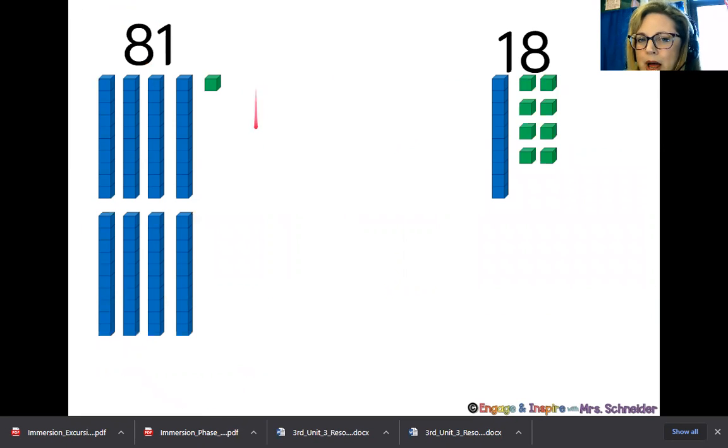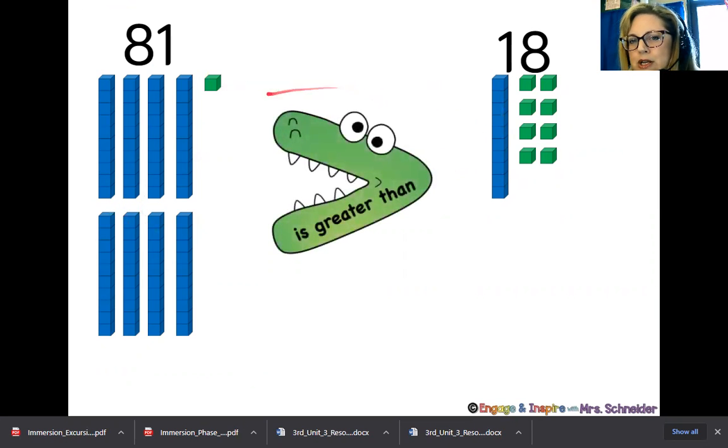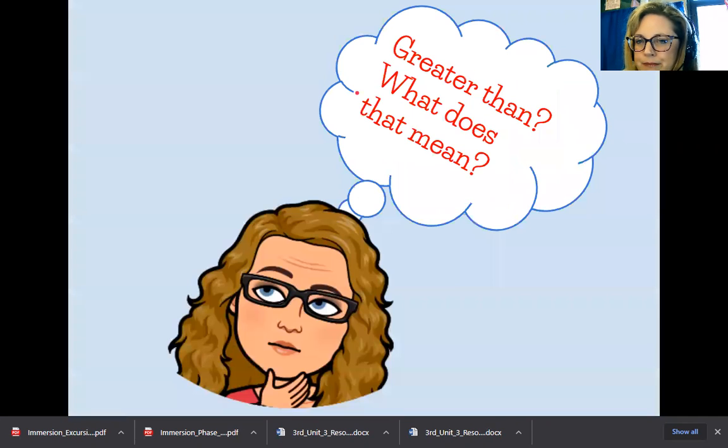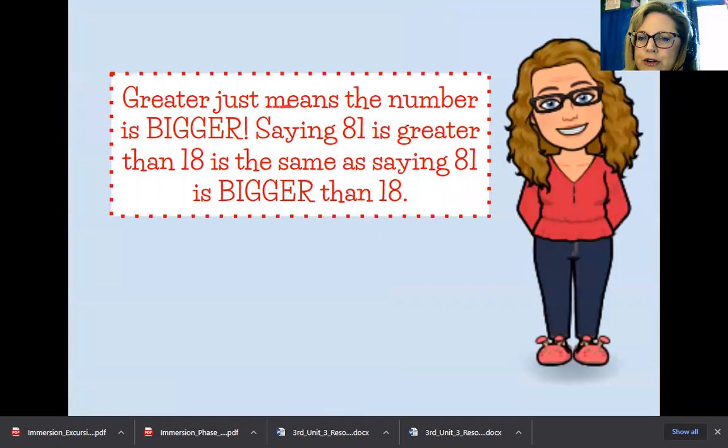So looking at it with base 10 blocks, we have 81 here or eight tens and one one. Here we have one ten and eight ones. Which one's bigger? The alligator is going to bite towards the bigger number, which is 81. His mouth is open towards the bigger number. 81 is greater than 18. Greater than, what does that mean? Greater just means the number is bigger. Saying 81 is greater than 18 is the same as saying 81 is bigger than 18.